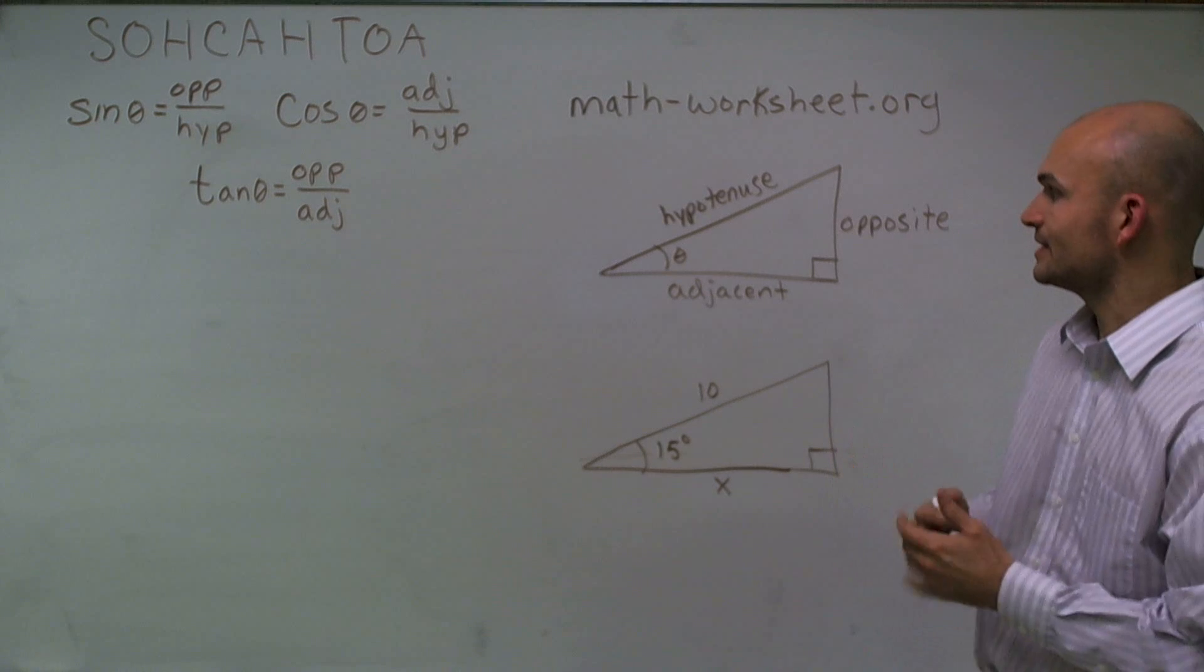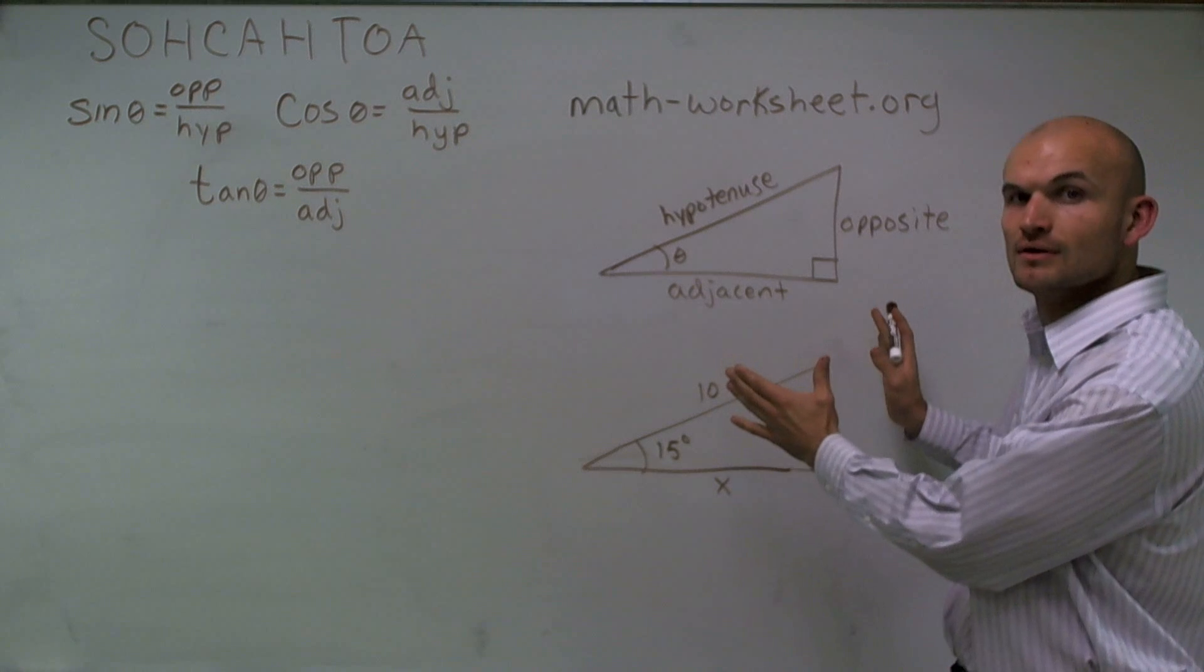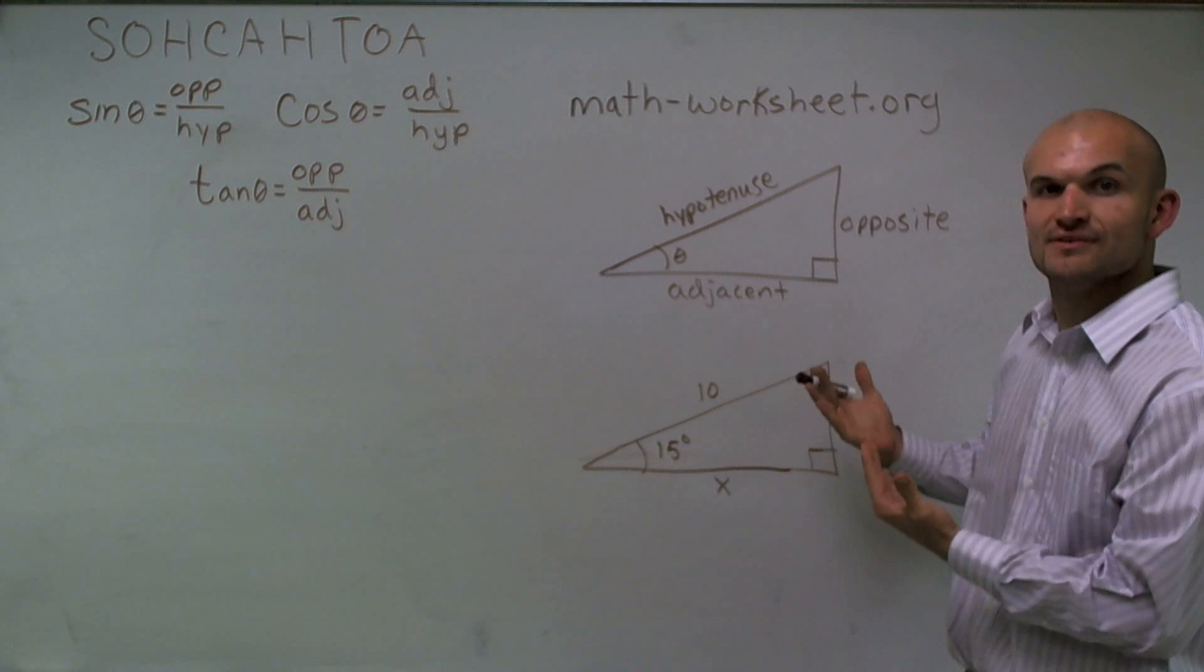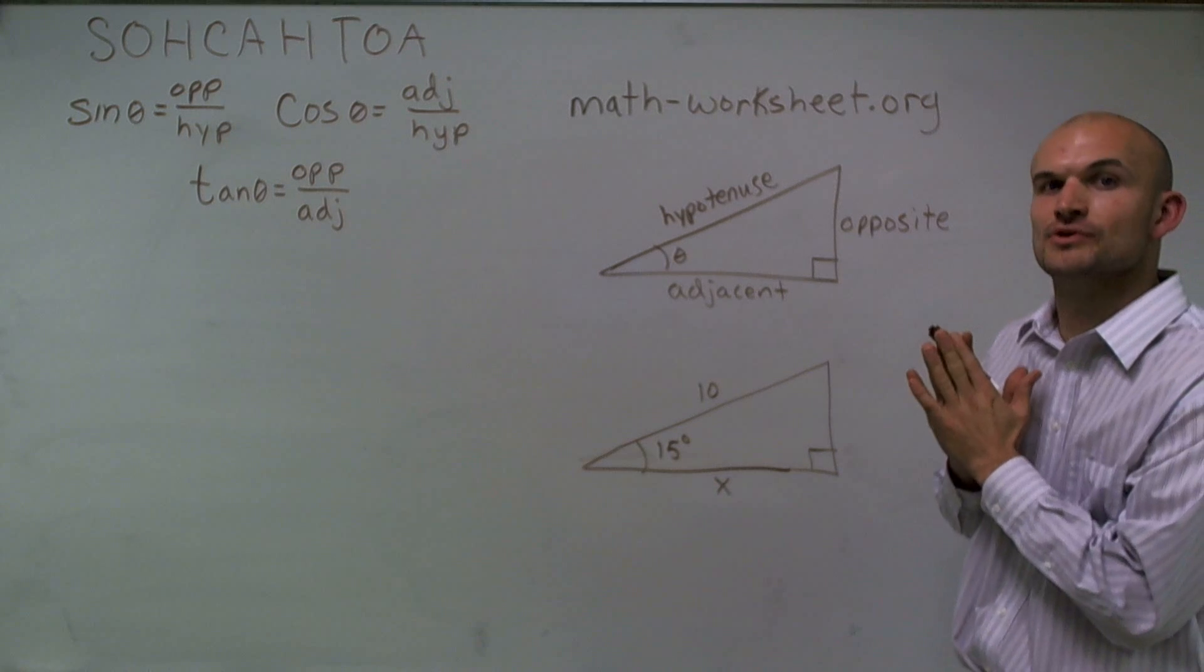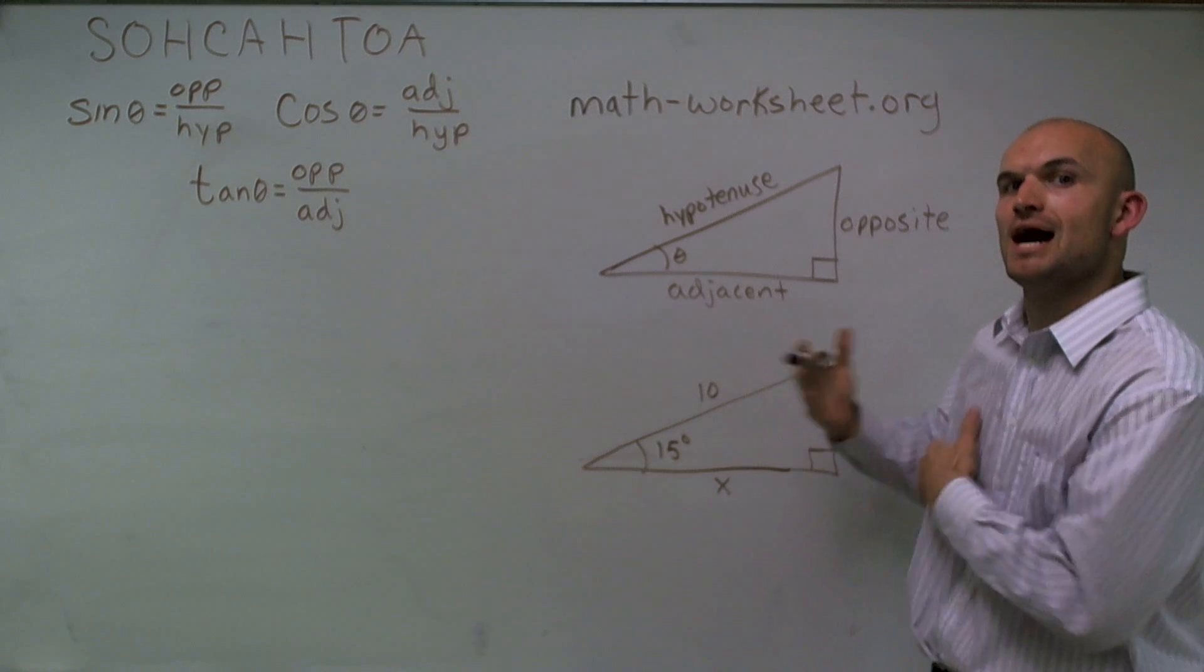So what we're going to be talking about here is when we're given a right triangle, how can we solve for a missing value? A couple things I want to remind you of is when we have a right triangle, how can we label it?